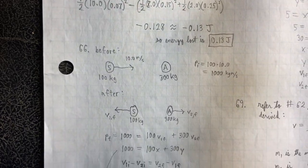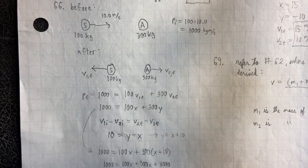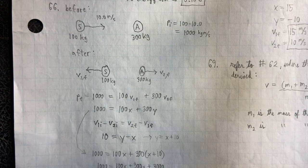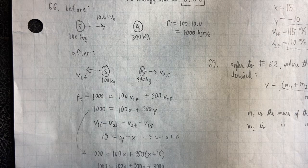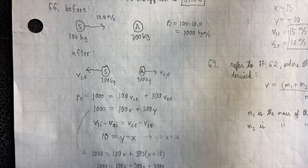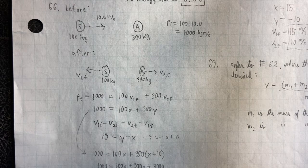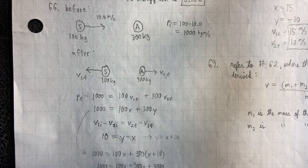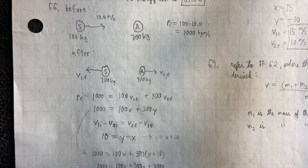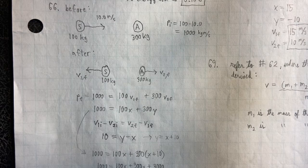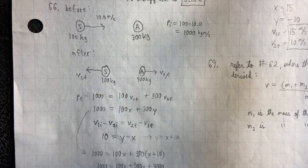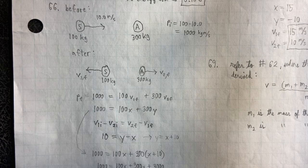Okay, number 66, doing more of these collision problems. So, we've got our before sketch and our after sketch. And the 300 kilogram mass is initially at rest. And then after they both have velocities. But the setup is really still the same. It's still just relative velocities, like the V1I minus V2I equals V2F minus V1F. And it's still just adding up the initial momentums as well. And that sets up our system of equations.